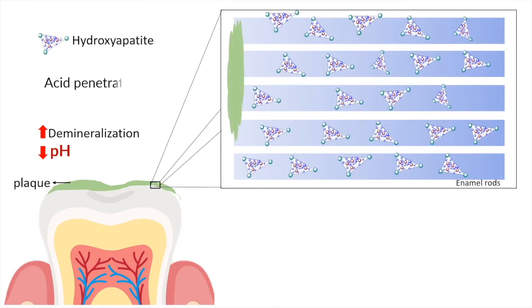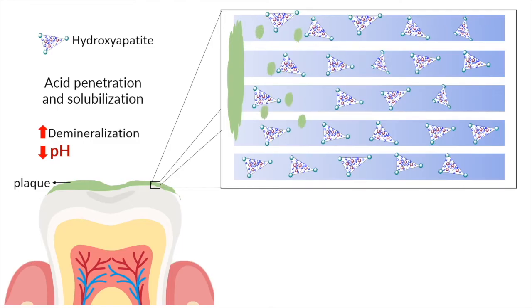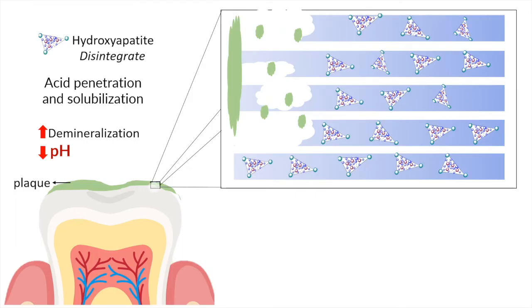This leads to solubilization of the enamel structures. The hydroxyapatite crystals are gradually dissolved by organic acids in the plaque, and as they disintegrate, this leads to crumbling of the enamel rods in those regions, which is clinically evident in the form of a white spot formation.